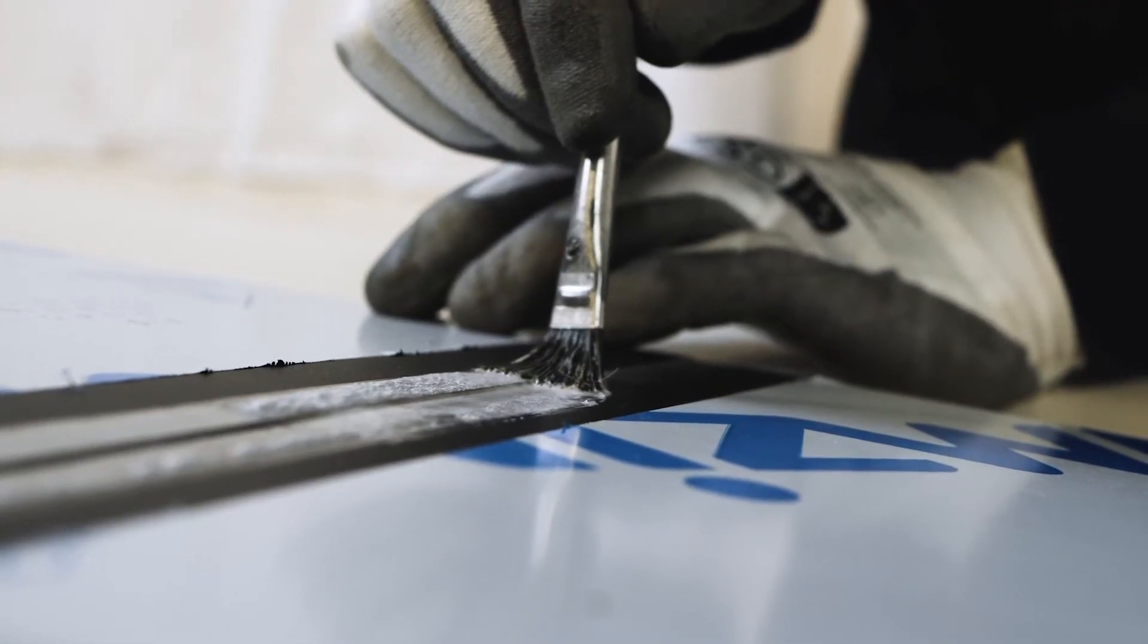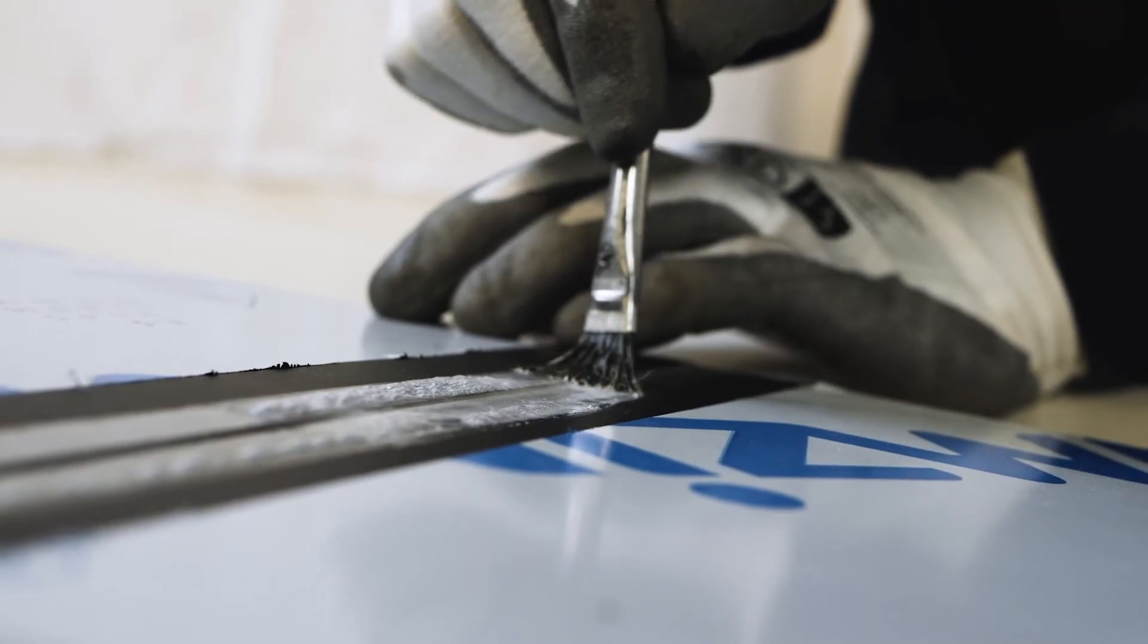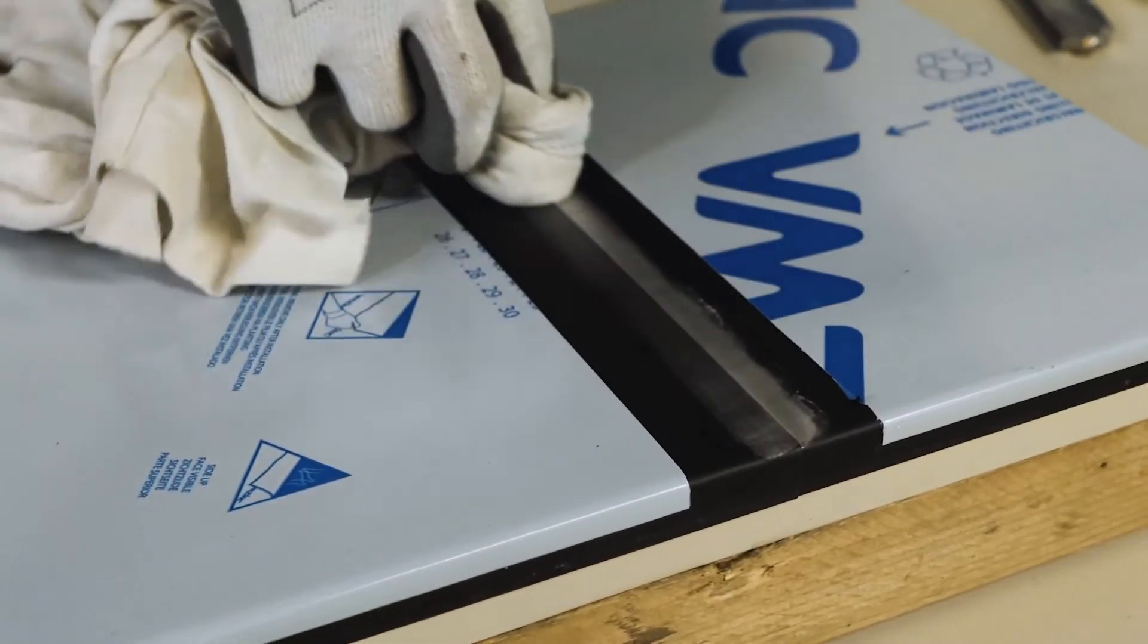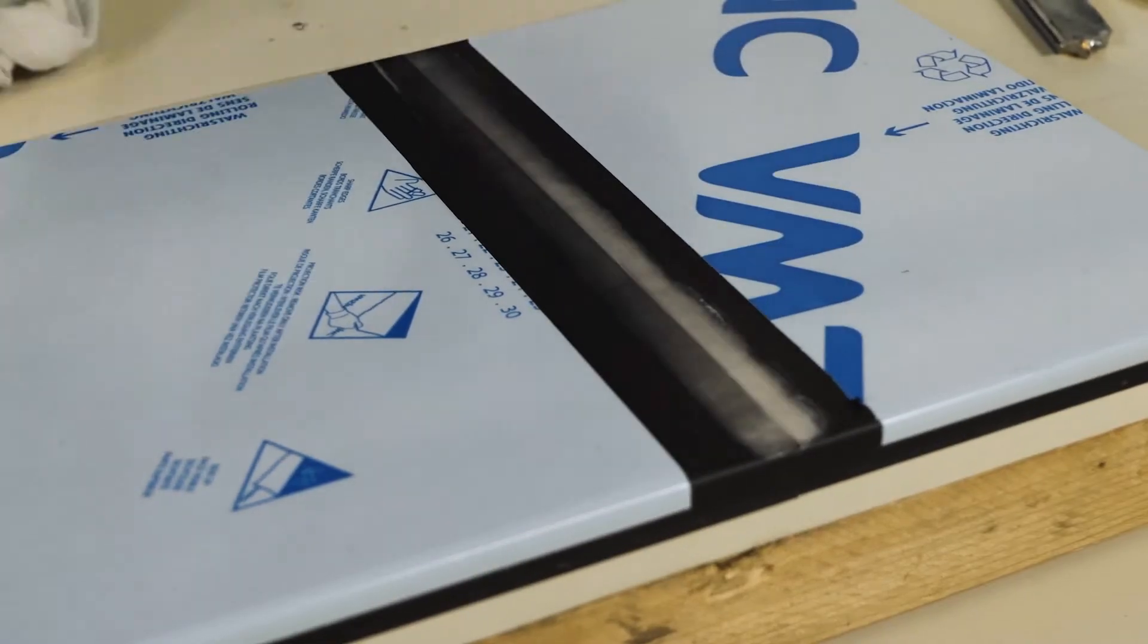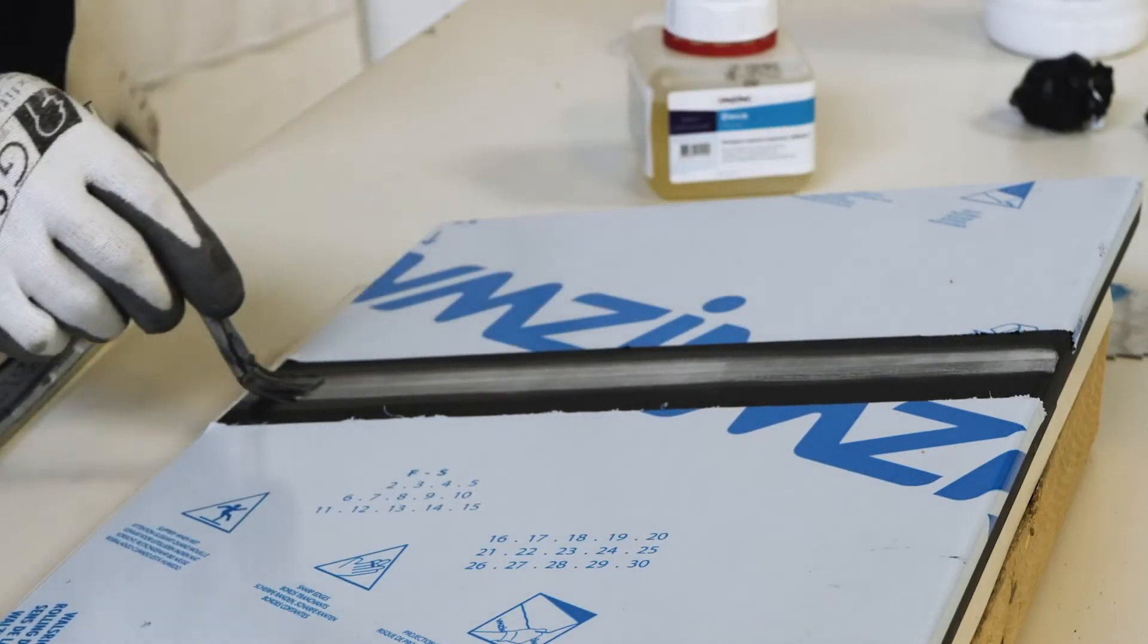Before soldering, it is critical that clean, natural zinc is exposed. Zin-7 flux is then applied to the joint to be soldered.